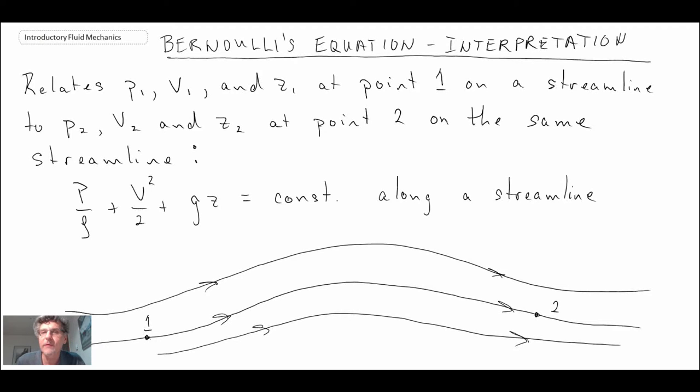There's a more general form of Bernoulli's equation that gives us a little bit more flexibility, and that applies if we have a condition where the flow is what we call irrotational. We haven't talked about irrotational flows yet, but we will.